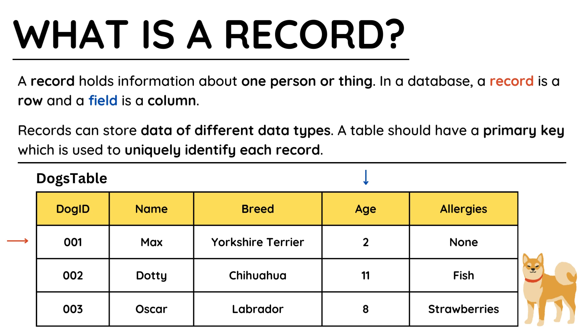The records in the dogs table are all the information about one specific dog, such as Max, who is a Yorkshire Terrier, two years old, and without any allergies. Because records are made up of several fields, they can store data of different data types.